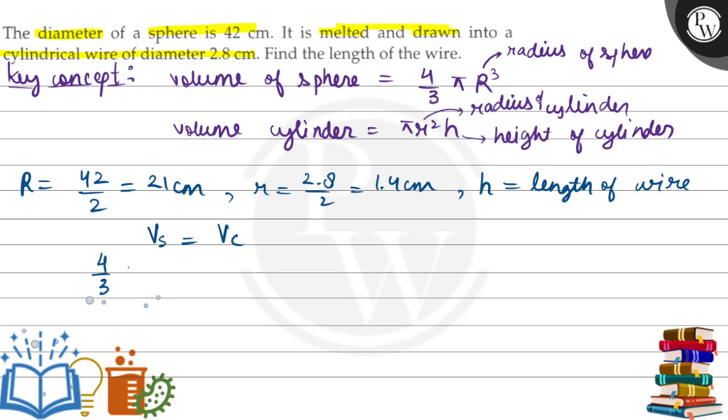So let's put the values: 4 by 3 pi R cubed will be equal to pi r squared h. Pi cancels with pi. So 4 times 21 cubed will be equal to 1.4 squared times 3 times h.